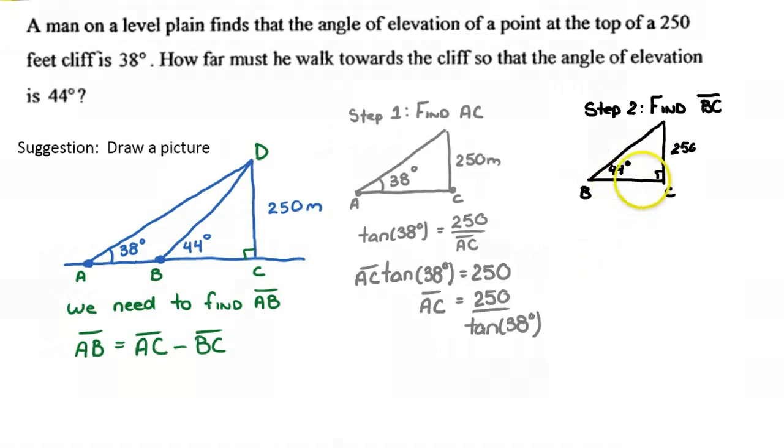And so therefore, we have the opposite, want to find the adjacent, so you can use tan. So tan of 44 degrees. Don't forget that degree symbol is the opposite, which is 250, over BC.